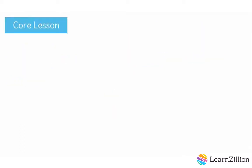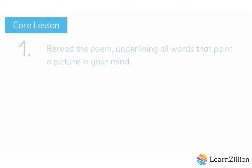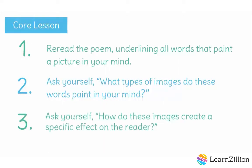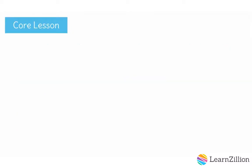Today, we are going to be exploring how imagery contributes to the mood of a poem. We are going to use these three steps to help guide us. Step one: reread the poem, underlining all words that paint a picture in your mind. Step two: ask yourself, what types of images do these words paint in your mind? Step three: ask yourself, how do these images create a specific effect on the reader? So, let's begin.